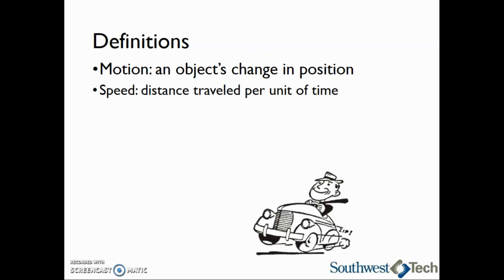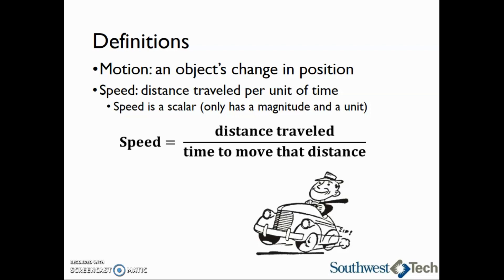Speed is the distance traveled per unit of time. Speed is a scalar, which means it only has a magnitude and a unit. Direction traveled does not matter when we are talking about speed. To find the speed of an object, we will take the distance traveled divided by the time it takes to move that distance. Some typical units for speed are miles per hour, kilometers per hour, meters per second, and feet per second.